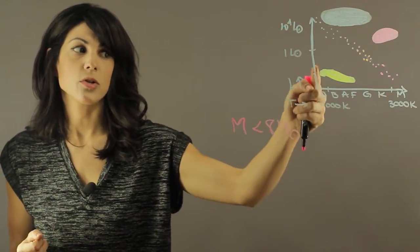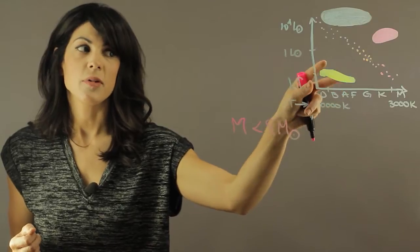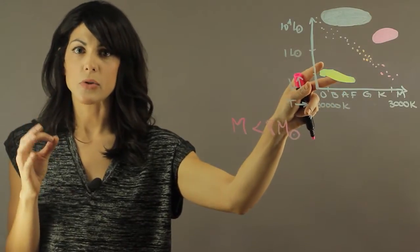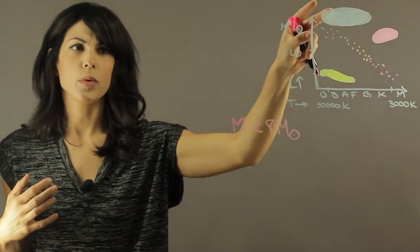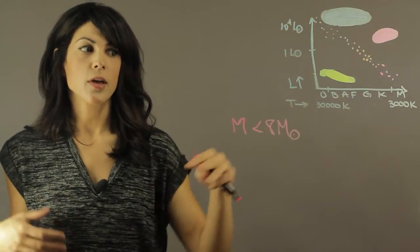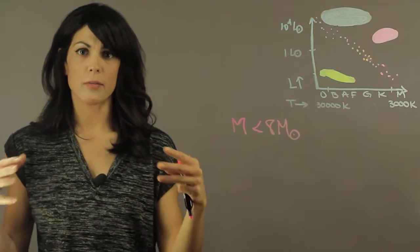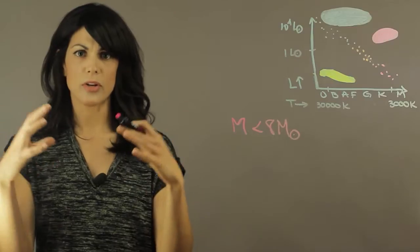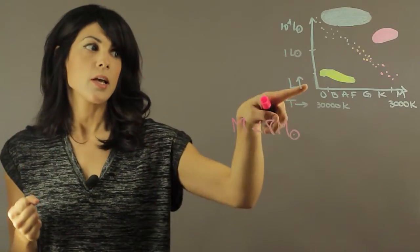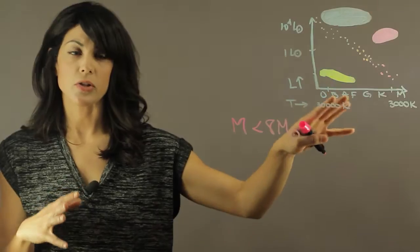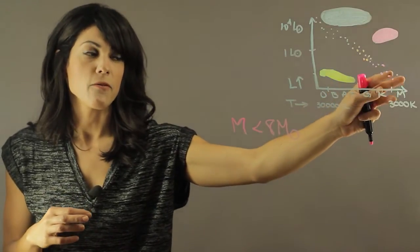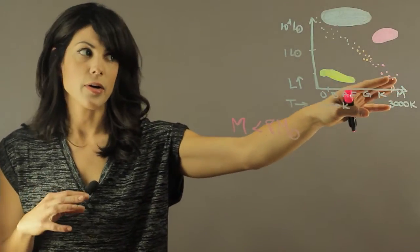So here we have, in this region, we have the really hot but very dim, so not very bright. Over here we have the blue supergiant, which are very hot and very powerful, they're doing a lot of power. So they're very large and they're very luminous.